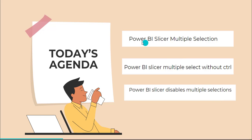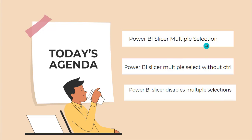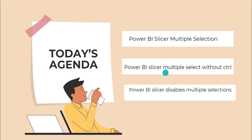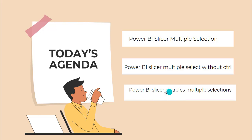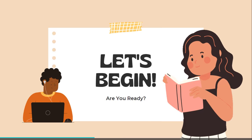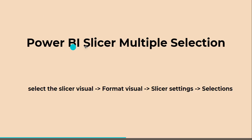First, we will see how to use the Power BI slicer visual with multiple selections. Secondly, we will see how to use the slicer visual without the control key to select multiple values. And finally, we will see how to disable the multiple selections in the slicer visual. So let's begin with the Power BI slicer multiple selections.